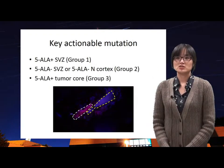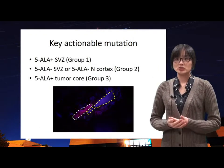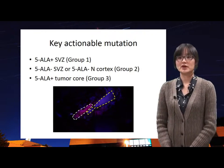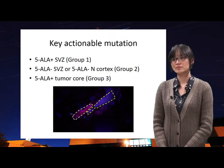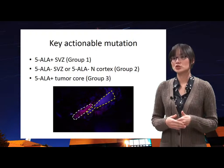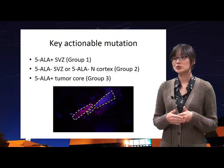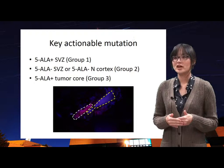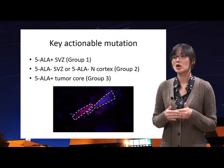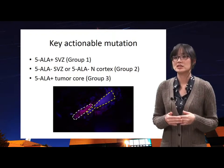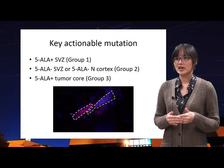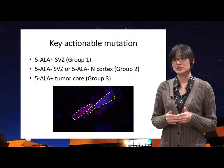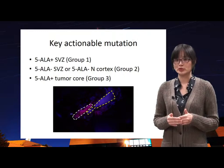Three groups can be suggested to search the origin of tumor. One group is 5-ALA positive subventricular zone. Another group is 5-ALA negative subventricular zone or 5-ALA negative cortex. The other group is 5-ALA positive tumor. Through molecular analysis, we can find the original tumor.